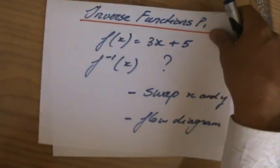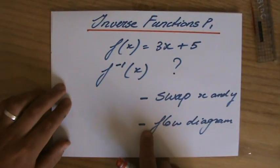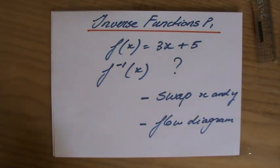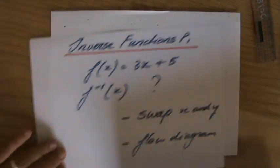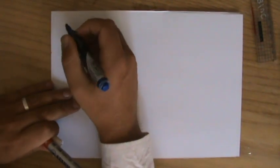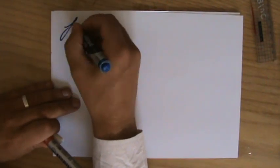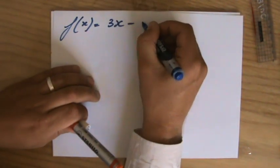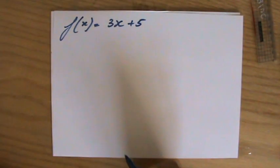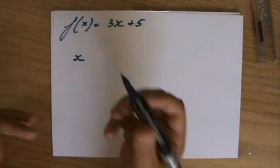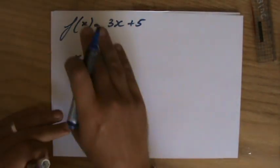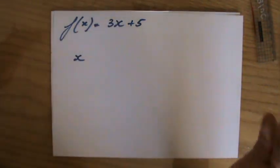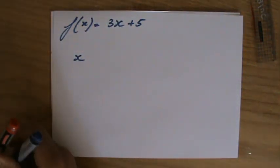Let's remember that answer because the other strategy is to make a flow diagram. I'm going to write down the function again: f(x) equals 3x plus 5. And what is the flow diagram? You start with x, and if you look at BODMAS, what is the first thing they do with x?